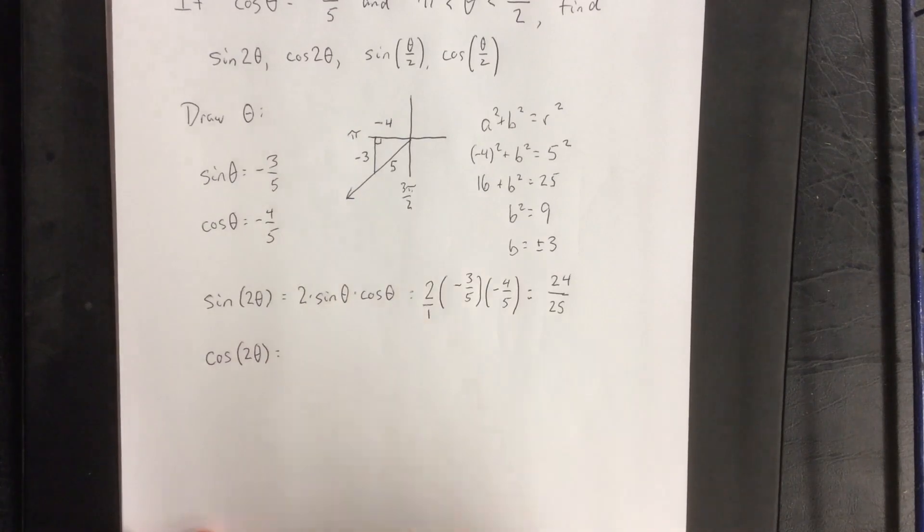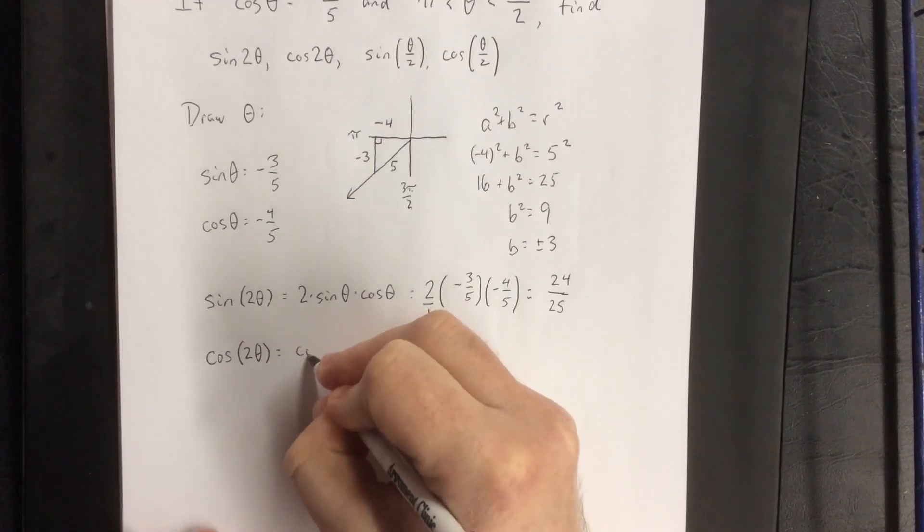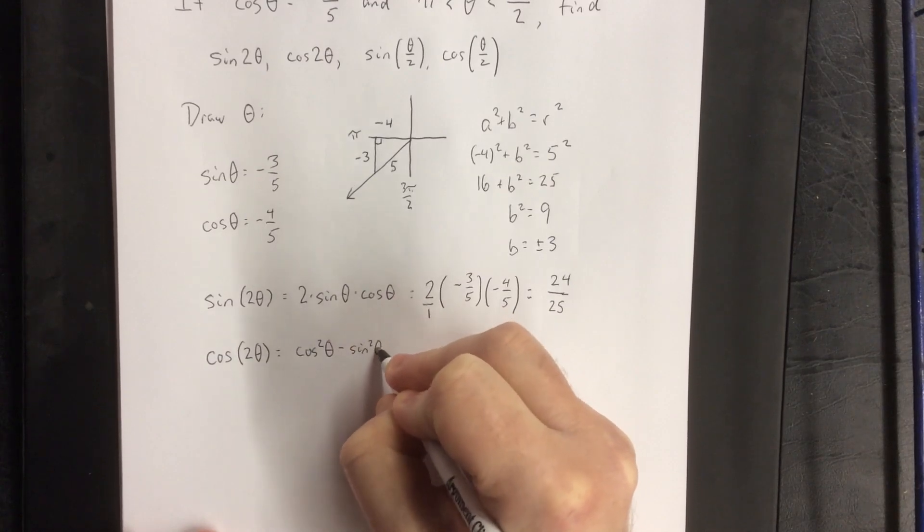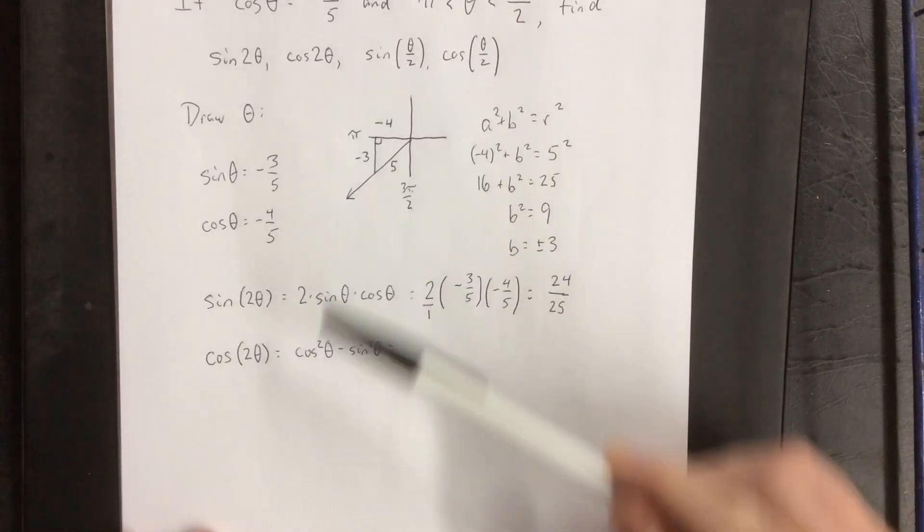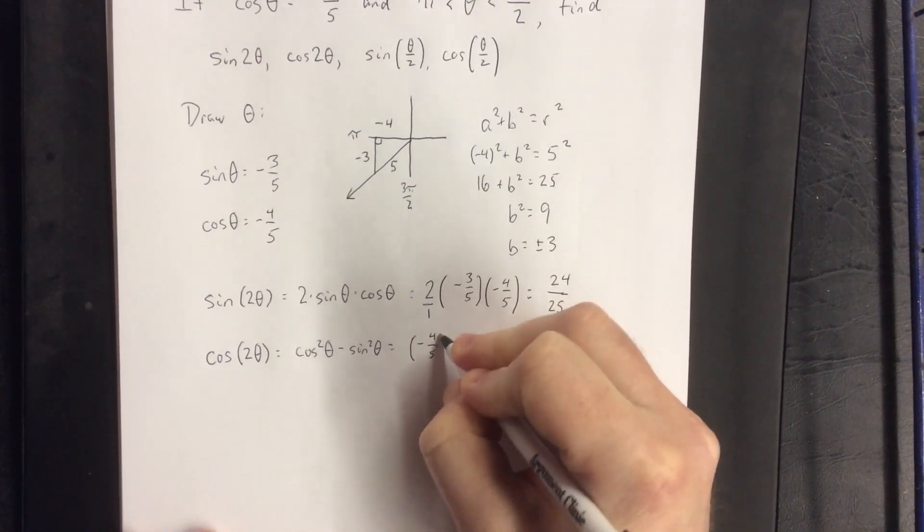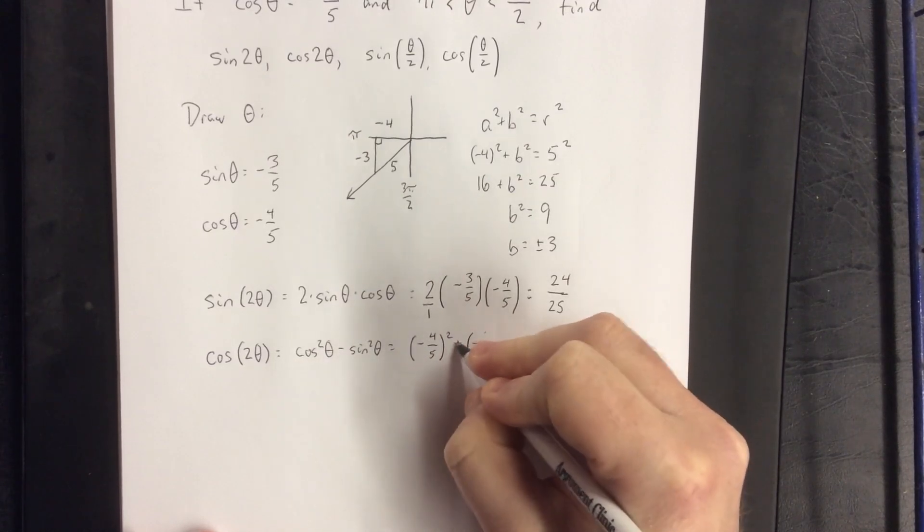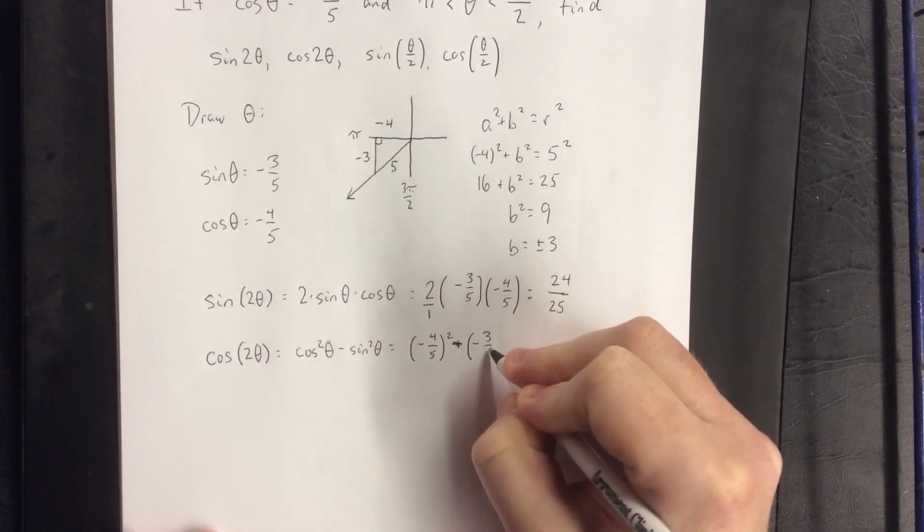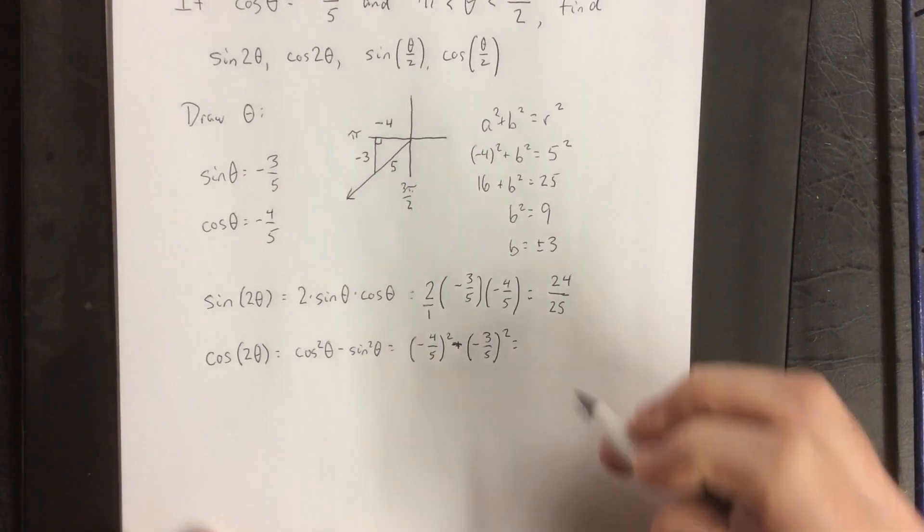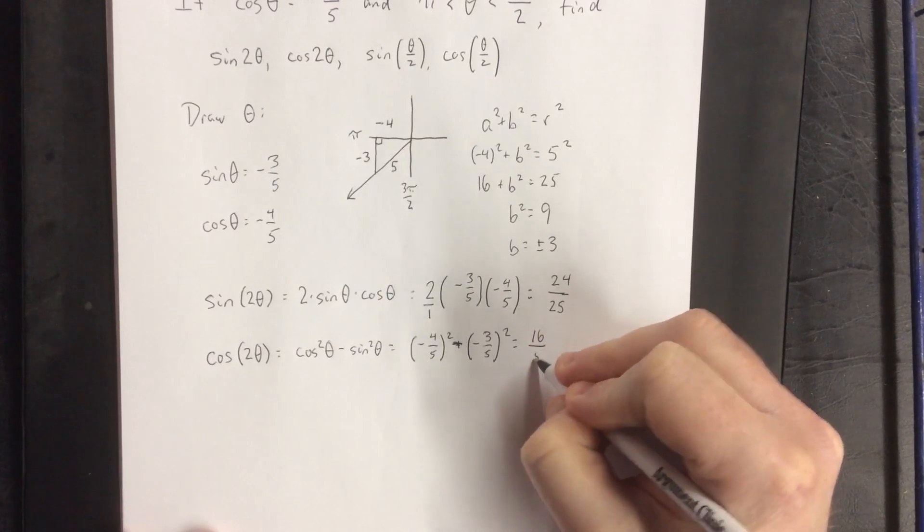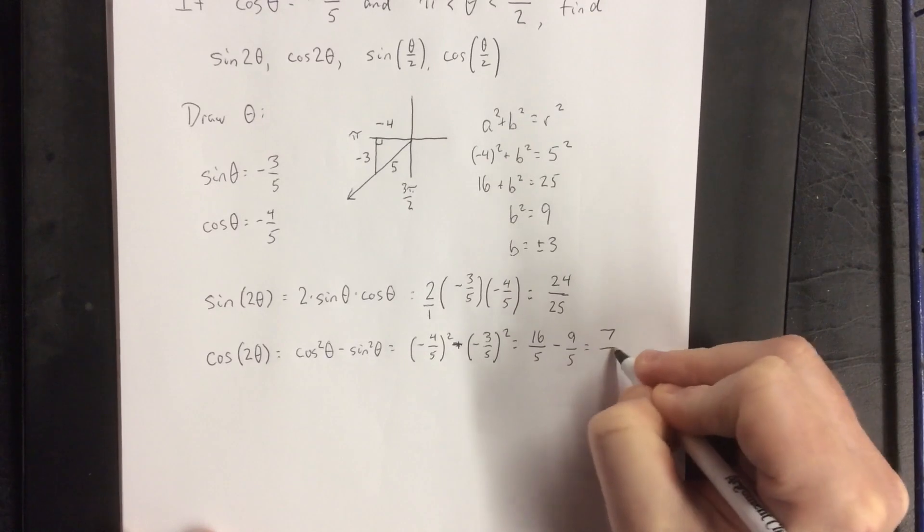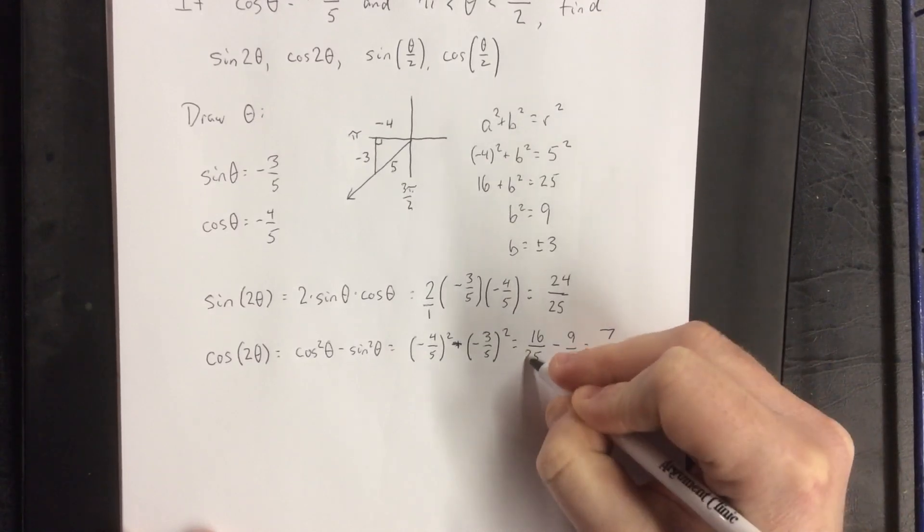For the cosine of the double angle, we have three different forms of this. One of them is cosine squared theta minus sine squared theta. Since we went through all of the trouble of finding both the sine as well as the cosine, might as well make use of this. For this, we're going to square the negative four-fifths, and we're going to square the negative three-fifths, and then subtract the results. So, four-fifths quantity squared will be sixteen-twenty-fifths minus three-fifths squared will be nine-twenty-fifths, and subtracting those gives me seven over twenty-five.